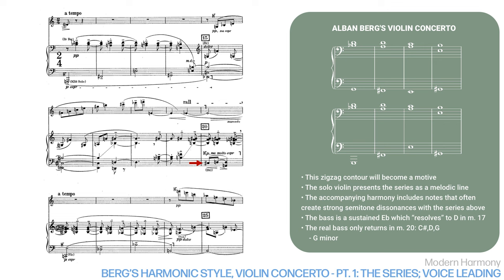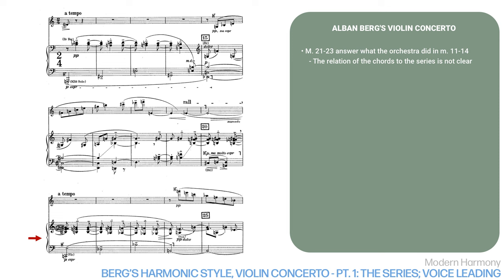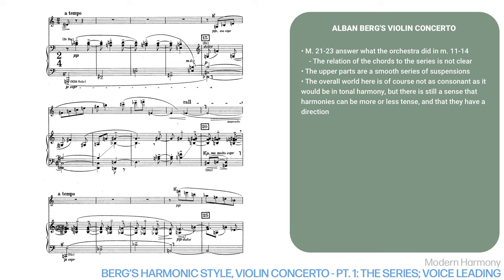Then measures 21 to 23 answer what the orchestra did in measures 11 to 14. This time, however, the relation of the chords to the series is not clear. The bass line has the same leaping motive, but the last interval is not a minor sixth as it was the last time — rather, it's a major seventh, once again an interval that does not appear in the series. The upper parts, in the trumpets, are essentially a smooth series of suspensions. This is important because suspensions are dissonances that resolve, which implies that there's still a hierarchy of consonance and dissonance, with the latter resolving into the former. The overall world here is, of course, not as consonant as it would be in tonal harmony, but there's still a sense that harmonies can be more or less tense, and that they have direction.